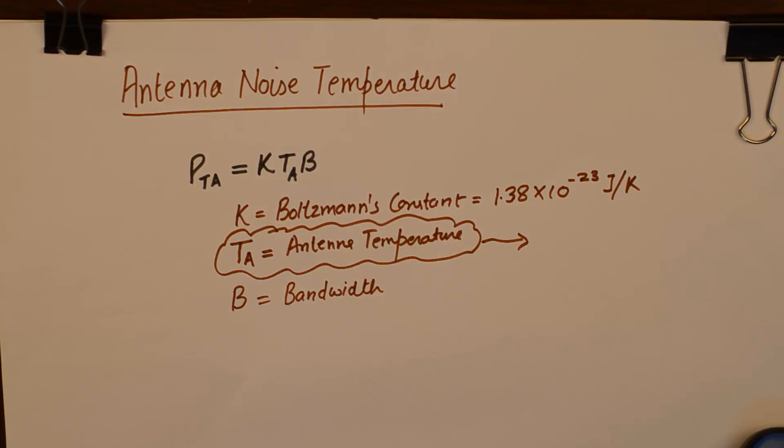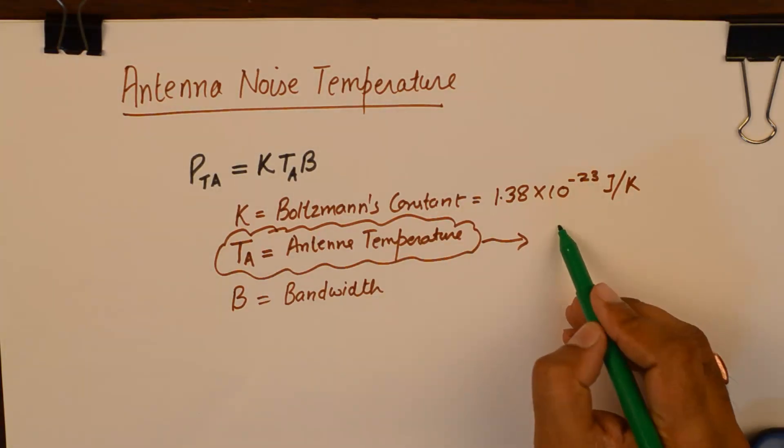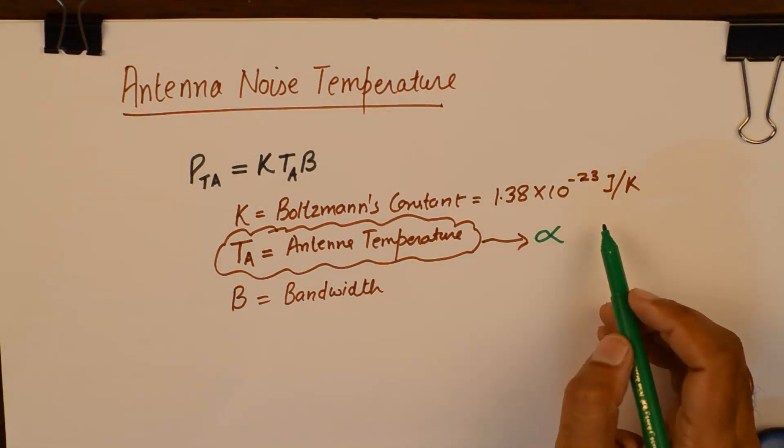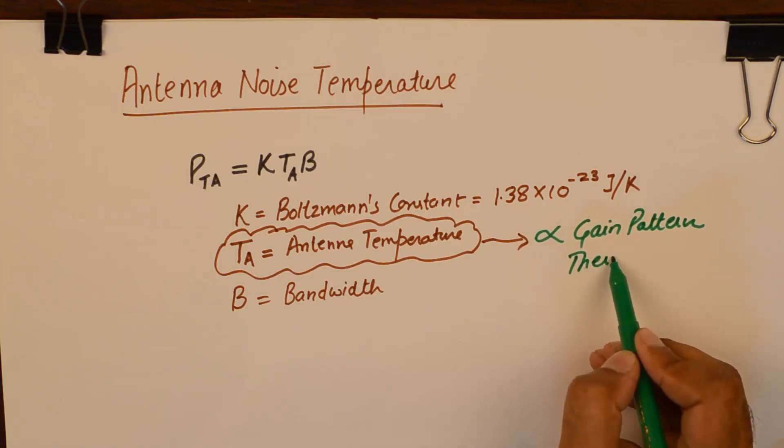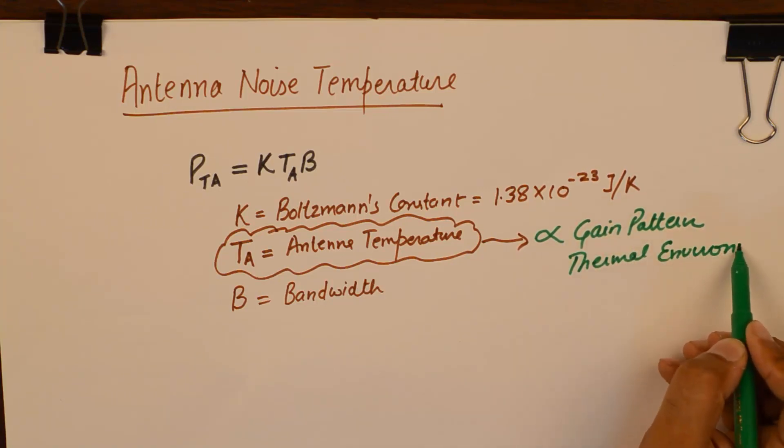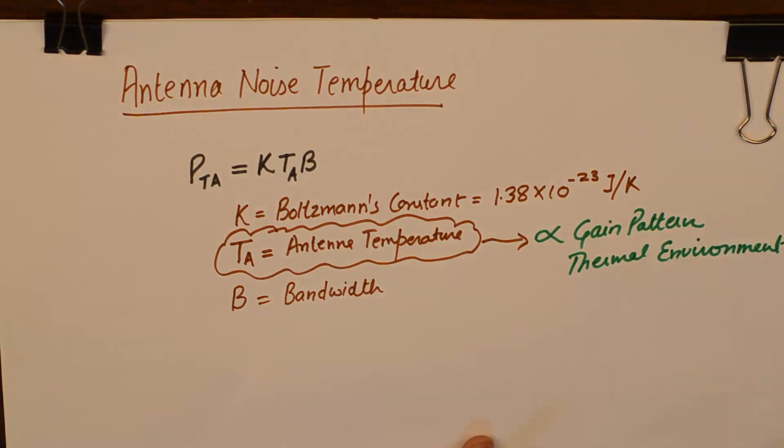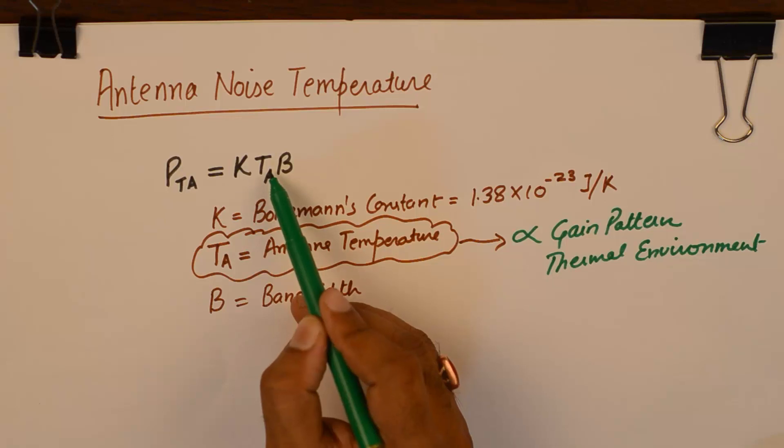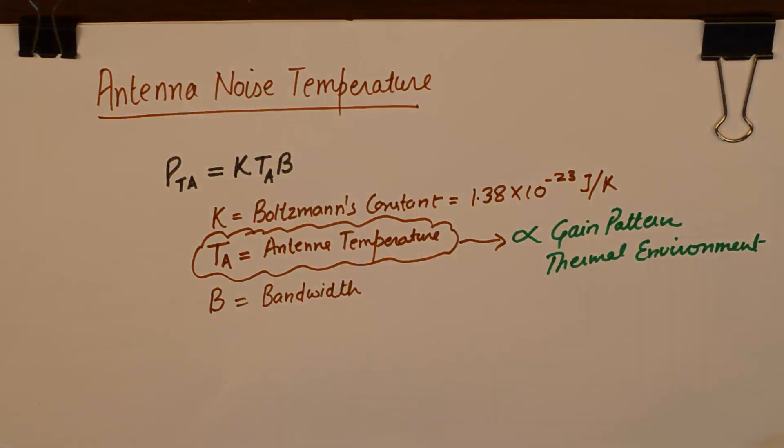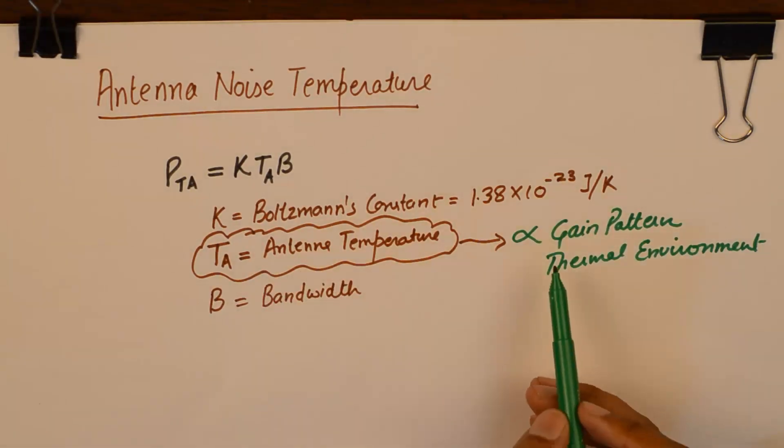And the value of operation of the antenna, we will find that the antenna temperature is directly proportional to two parameters. One is the gain pattern, and the other one is thermal environment. Now contrary to the popular belief of temperatures in electrical components, where in this formula temperature represents the environmental temperature only, here the temperature will be dependent upon two parameters. So that is the only difference here.